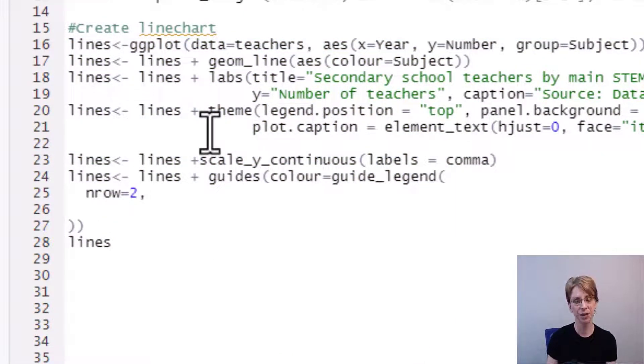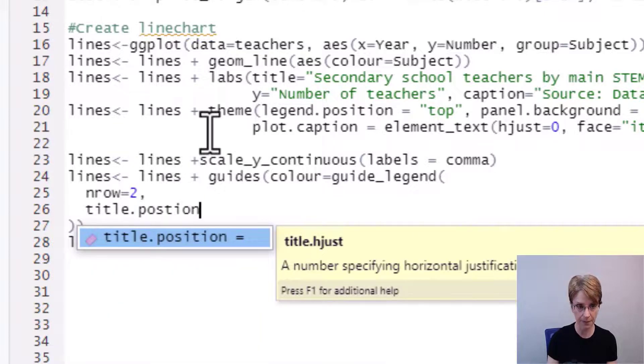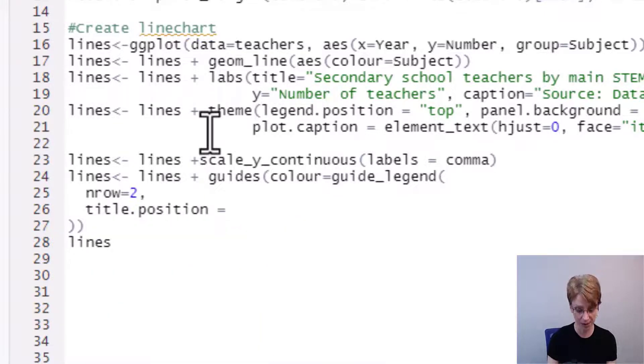The other thing I would like to do is move the positioning of the word subject which is the legend title I would like the word subject to sit on top of the rows rather than to the left hand side to do that I just type in title.position equals and then inside double quote marks top.